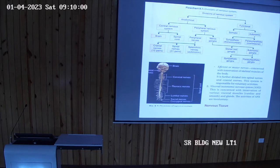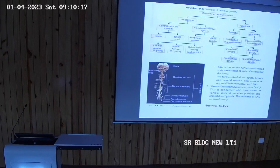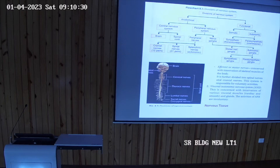For this special property of conductivity, the nervous system is consisting of cells. As we have read in previous classes on tissues, all tissues have cells. Similar to those, the nervous system also has cells. The cells present in the nervous system are of two types: one is the neuron and another is neuroglial cells.